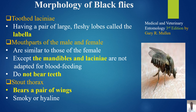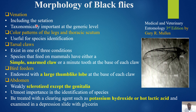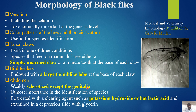Venation is taxonomically important at the generic level. Color pattern of the legs and thoracic scutum are useful for species identification. Tarsal claws exist in one of three conditions: species that feed on mammals have either a simple or unarmed claw or a minute tooth at the base of each claw, while bird feeders are endowed with a large thumb-like lobe at the base of each claw. The abdomen is weakly sclerotized except for the genitalia, which are of greatest importance in species identification and should be treated with clearing agents such as potassium hydroxide or hot lactic acid and examined on a depression slide with glycerin.